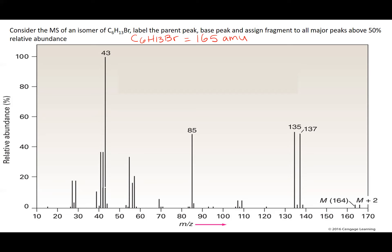Bromine exists as two isotopes, bromine 79 and bromine 81, and their relative abundances are about 50-50. So that's why we don't have any molecules that weigh 165. About 50% of them are going to weigh 164 atomic mass units, and about 50% of them are going to weigh 166 atomic mass units.